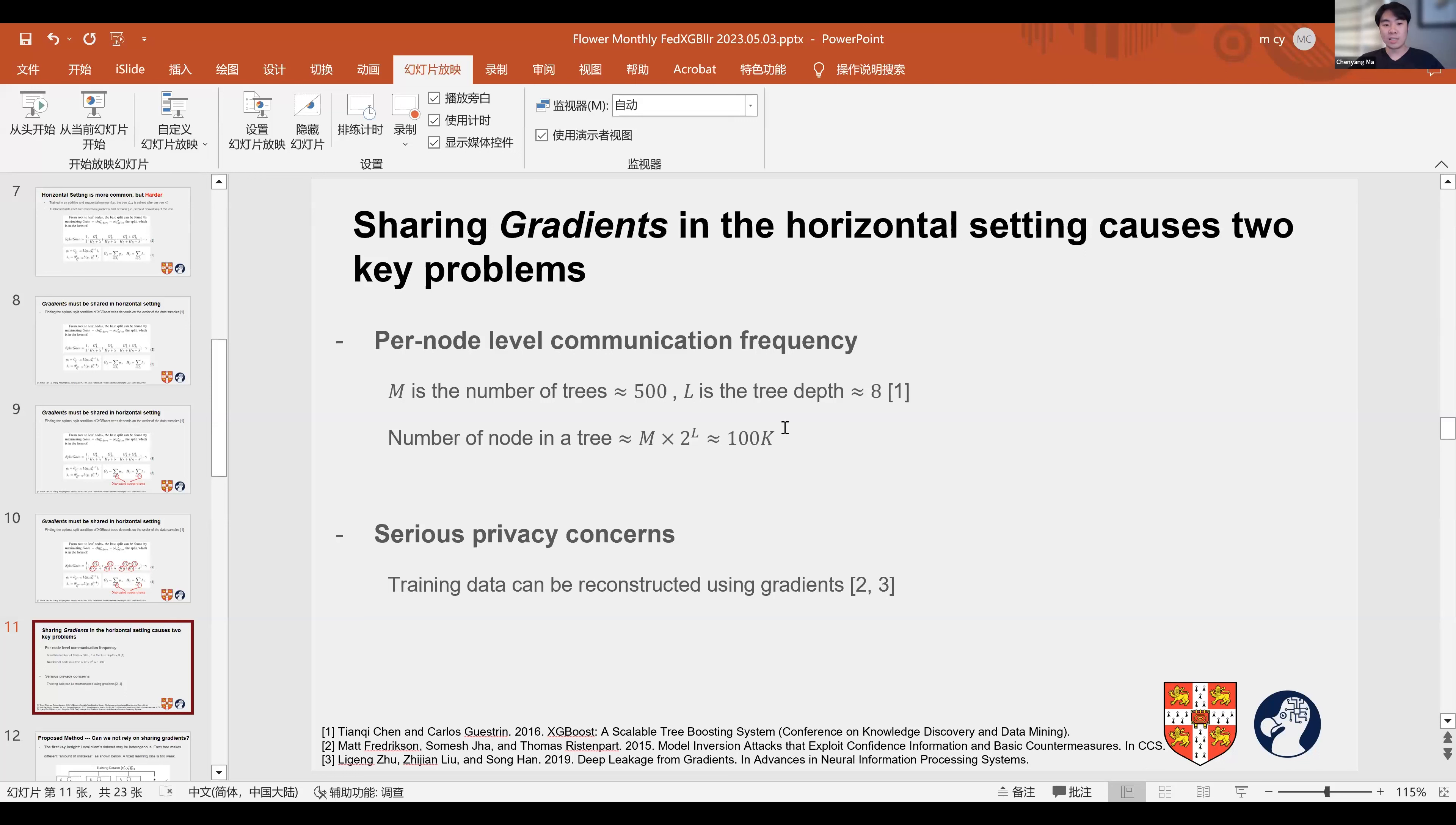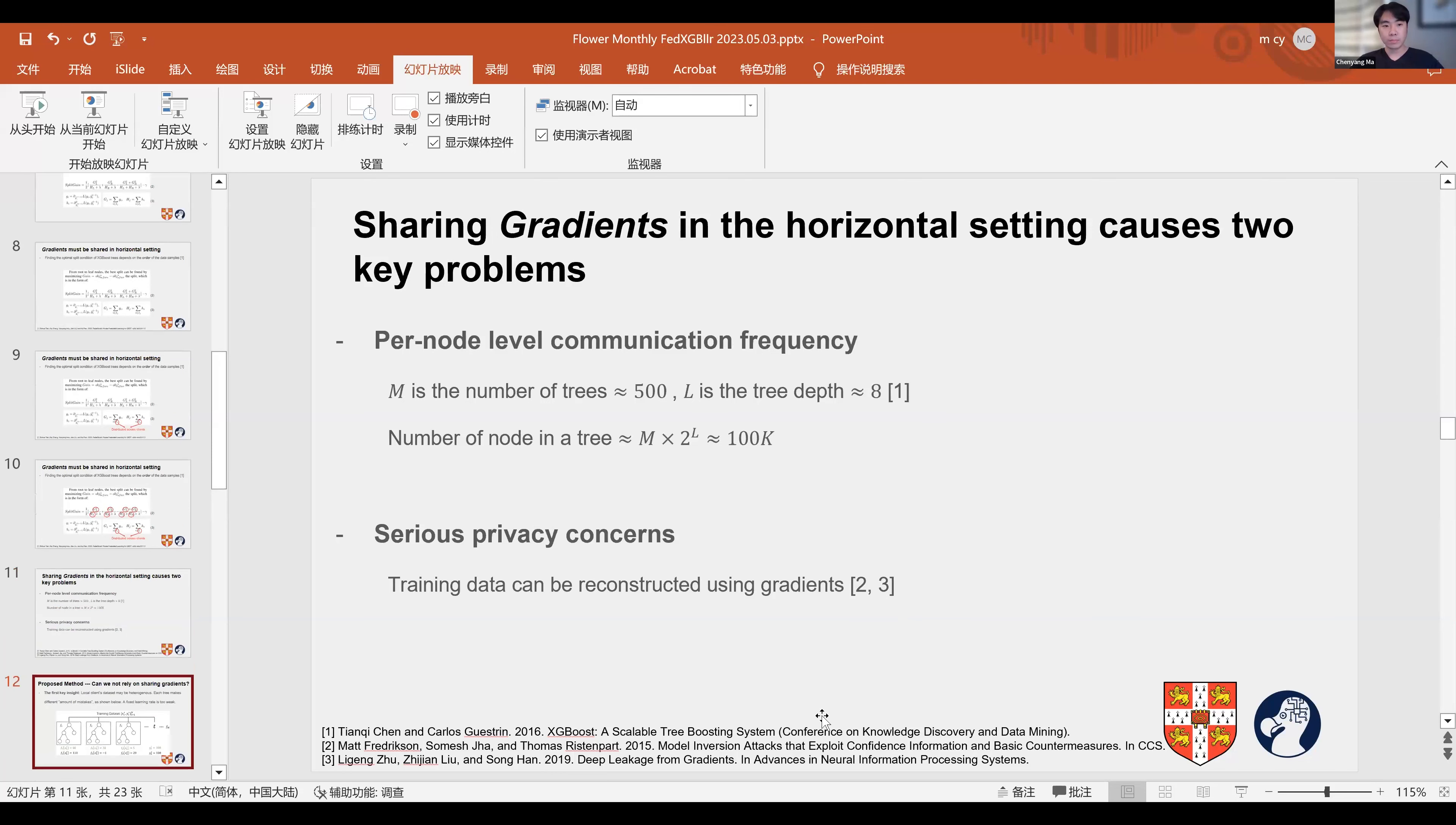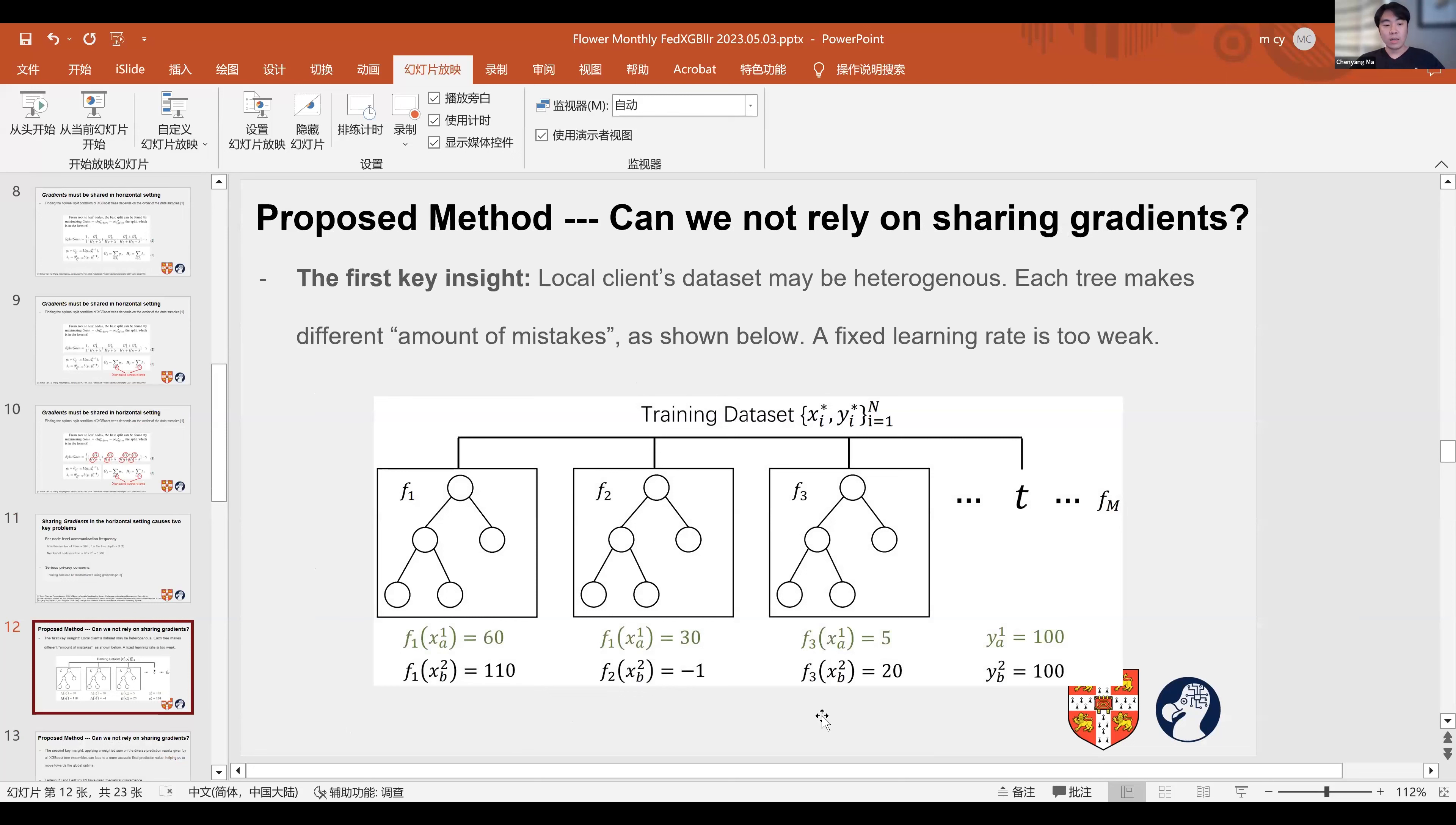The second concern is the serious privacy issue. The sharing of gradients is proved to be insecure by previous works because data can be reconstructed by sharing gradients and Hessians, which violates the core principle of federated learning, which is privacy protection.